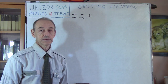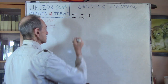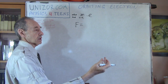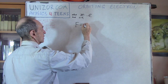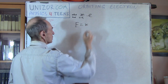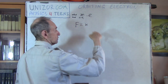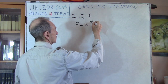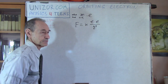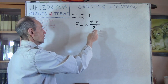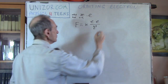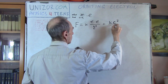Then we have Coulomb's law, which gives us the force between the nucleus and the electron — positive and negative — which is k times E squared divided by R squared, where k is Coulomb's constant. I'm talking about the magnitude of this force, which is kE² / R².